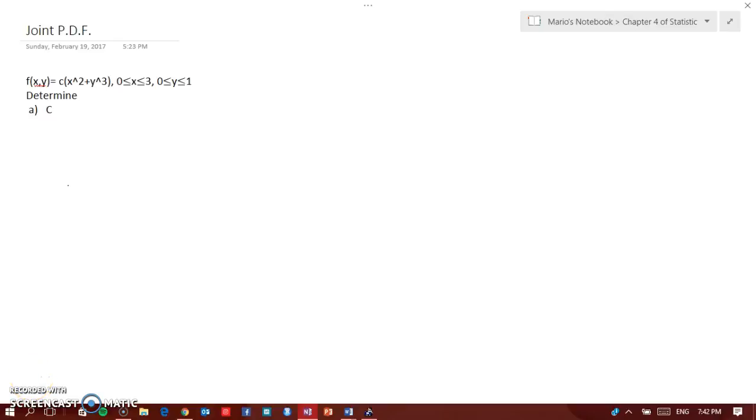Okay guys, suppose you have this joint PDF f of x. This thing, how do we find C? So first, I'm going to have, because it's a joint PDF, we will have a double integral. I'm going to put the C out because it's a constant.